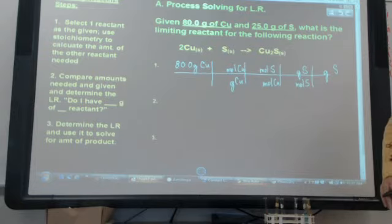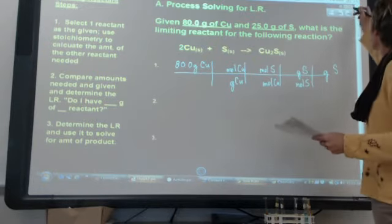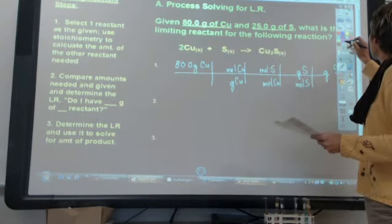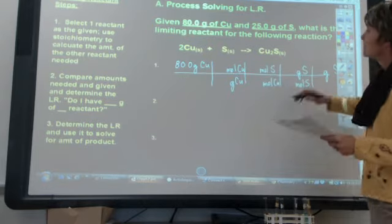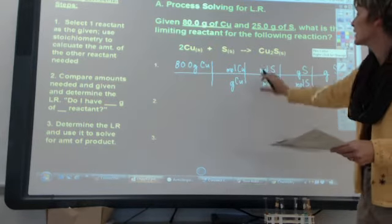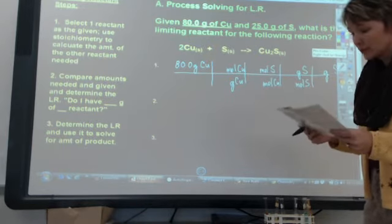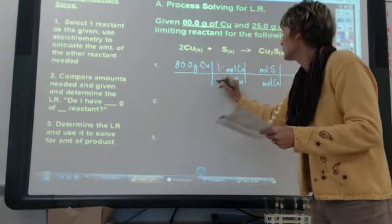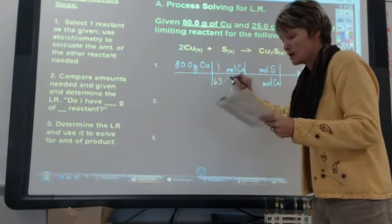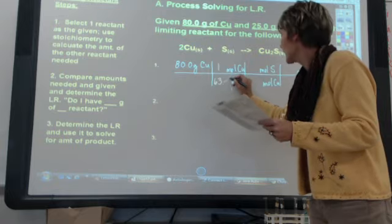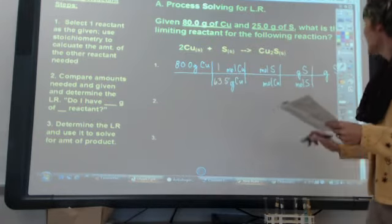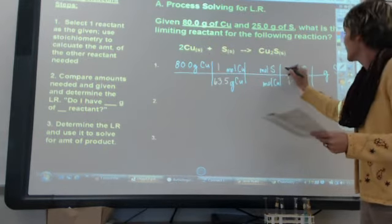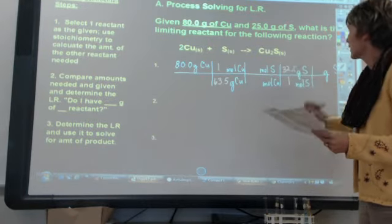Well, by using a periodic table, I can get my molar masses. And by using the balanced chemical equation, I can get my coefficients here. It looks like the molar mass of copper is 63.5 grams and the molar mass of sulfur is 32.1 grams.